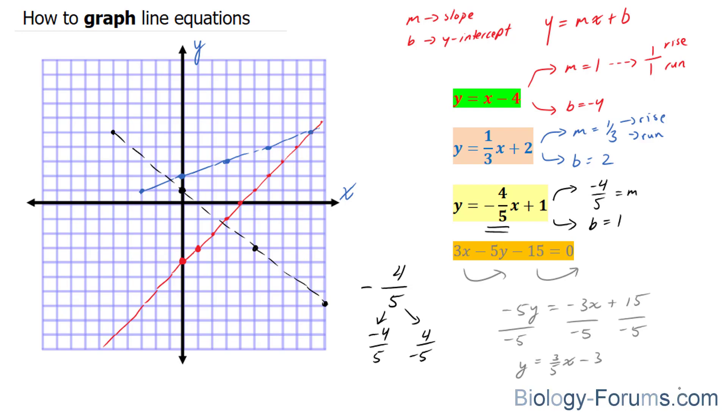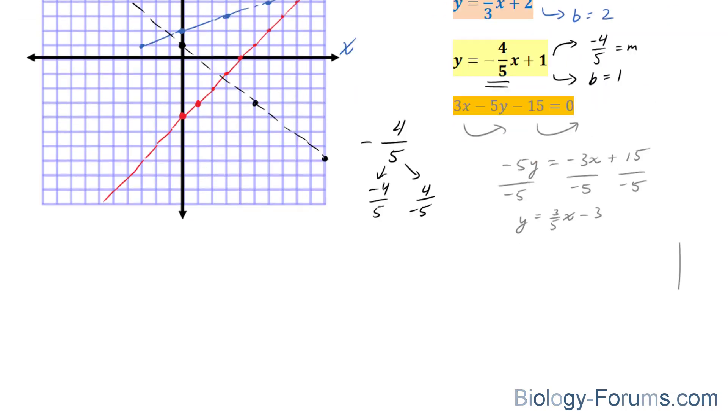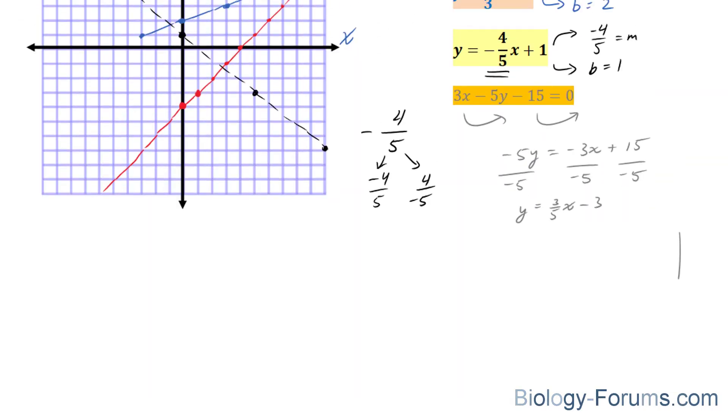Now, we can easily plot this. We can easily plot this because our slope is 3 over 5, and our y-intercept, your b-value, is negative 3. So, we're going to start off at negative 3.